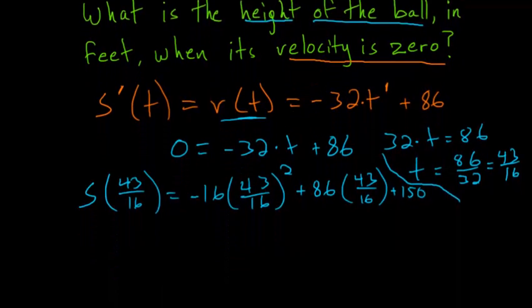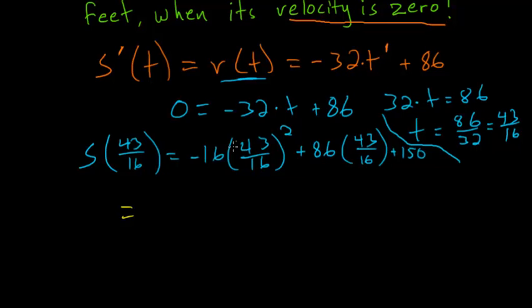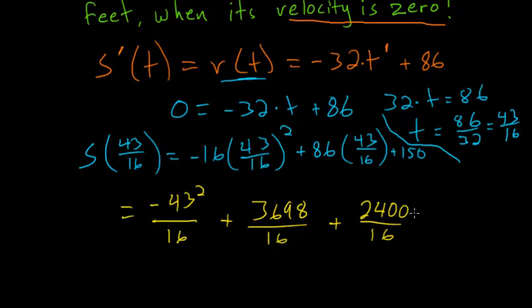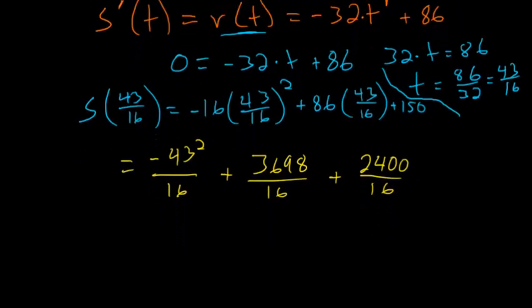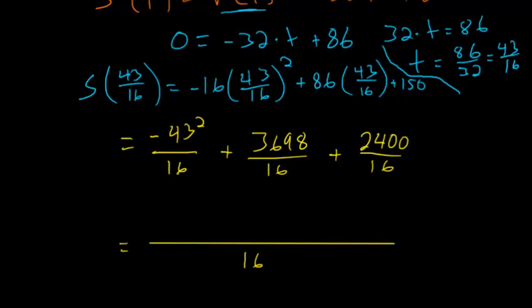From here we just need to do some simplification. This 16 here will cancel out with one of the 16s once we square this out. So we have -43²/16 + 3,698/16, and then plus 150. But I'll put this as a fraction with a denominator of 16. 150 times 16 is 2,400. Now all of these fractions have the same denominator. 43 squared is 1,849, with a minus sign in front, plus 3,698, plus 2,400.